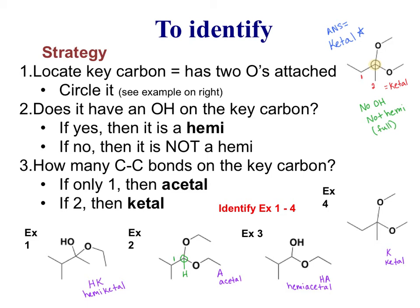For number one, we circle the carbon here. That one has got an OH, so it's going to be a hemi. Then how many carbons are attached to that key carbon? There's two. So it's a ketone, it's a ketal. So that's going to be a hemiketal.